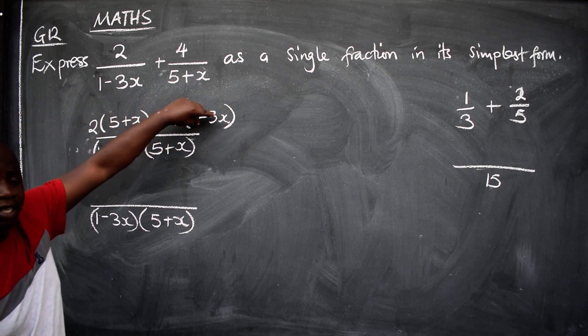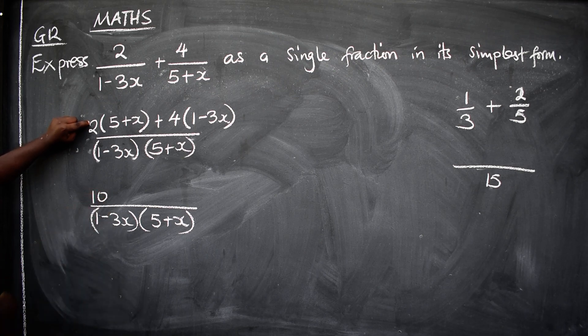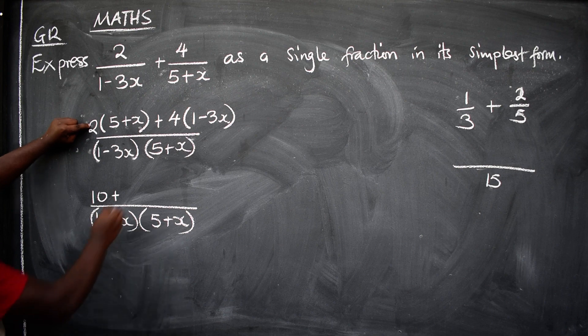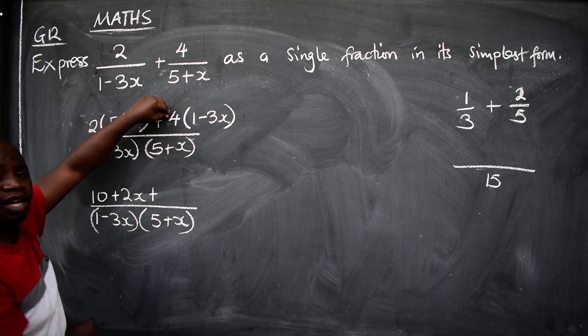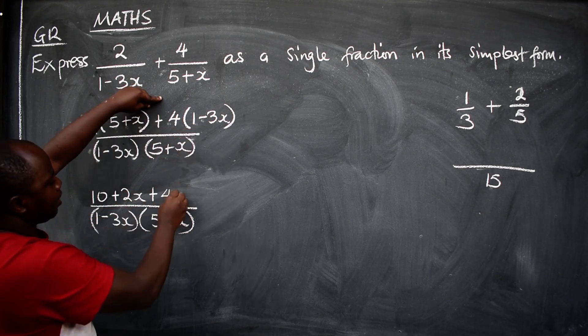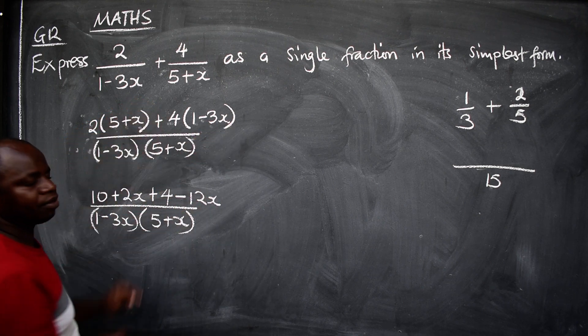We are going to say 2 times 5, it will give us 10 plus 2 times x to give us 2x. Plus 4 times 1 to give us 4, minus 4 times 3x to give us 12x.